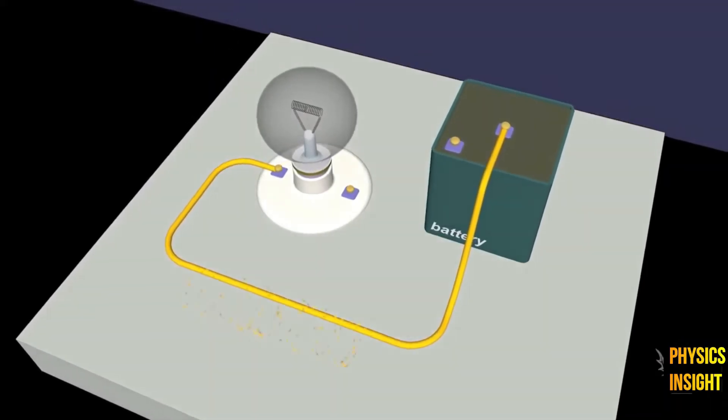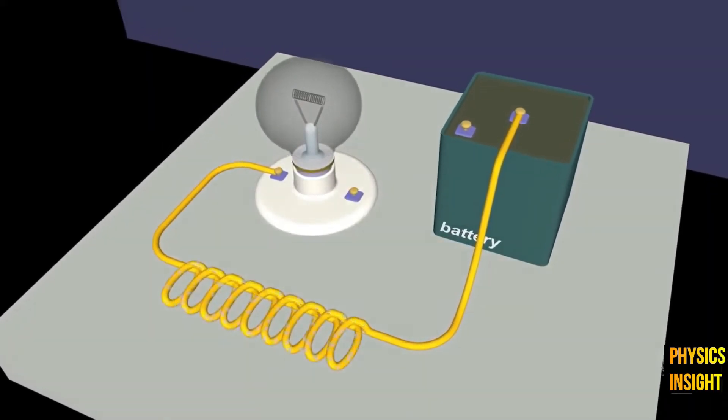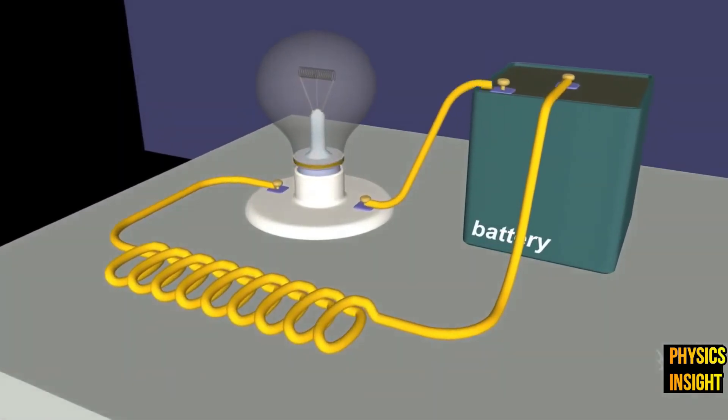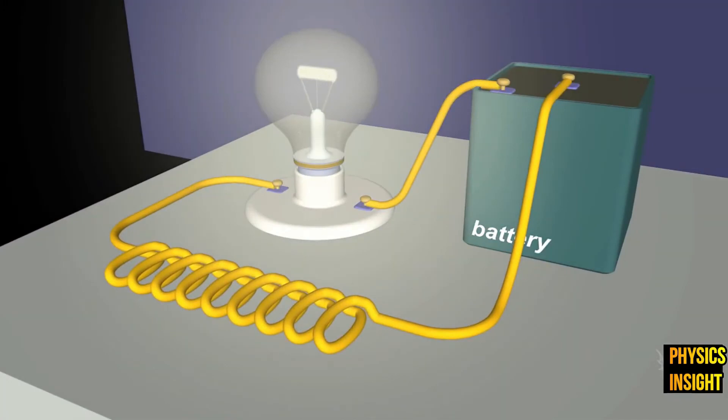Next, let's build the same circuit, but this time with more wire. When we complete the circuit, notice what happens. The light is not as bright. What happened?